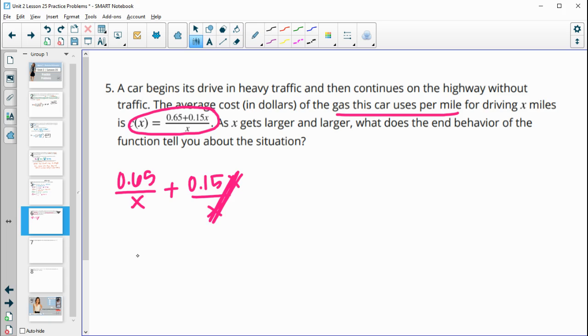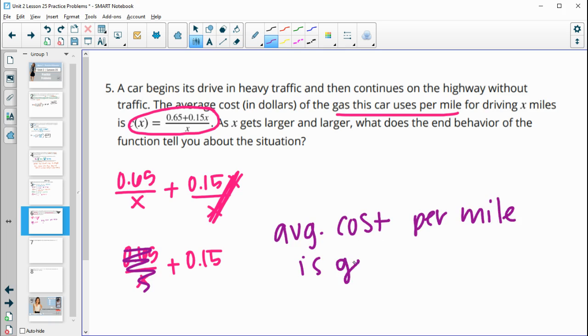So then this X will cancel to 1. So we have 0.065 divided by X plus 0.15. So as the X gets really, really large, this is going to drop out. So this is going to be basically 0 at a million. So that means that the average cost per mile is getting closer and closer to $0.15. So getting closer and closer to $0.15 as you drive more miles.